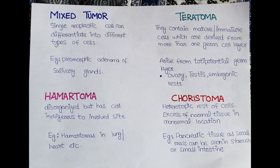Another terminology is teratoma, which contains mature or immature cells derived from more than one germ cell layer. All three basic germ layers — ectoderm, mesoderm, and endoderm — are found in teratomas. The word teratoma comes from the Greek word 'teras,' meaning monster. These tumors arise from totipotent germ cells and can occur in the ovary, testes, or embryonic midline structures.